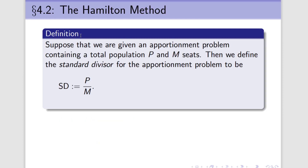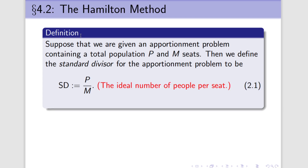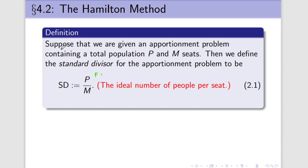To introduce Hamilton's method, we need to introduce a few moving parts that will make things easier. The first is called the standard divisor, which is a very simple number. It's simply what we get when we take the total population P and divide it by M, the number of seats. The standard divisor basically means the ideal number of people per seat — P represents people, M represents seats, so this fraction is people per seat.